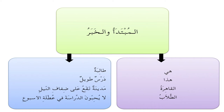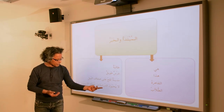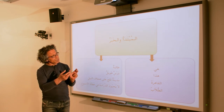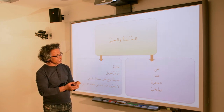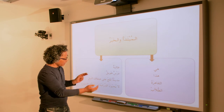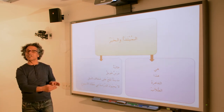Notice the diversity of الخبر and how it can also be a verbal sentence. Nonetheless, this is still a جملة إسمية — it has a subject, المبتدأ (الطلاب), and a predicate, الخبر, which is a verbal sentence. The rules of the verbal sentence will apply to that خبر.